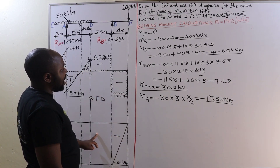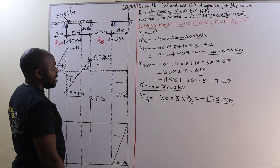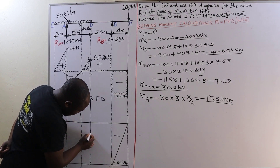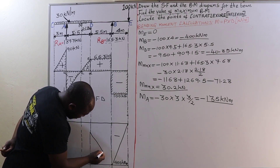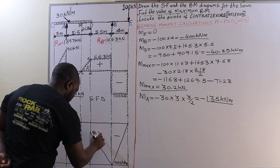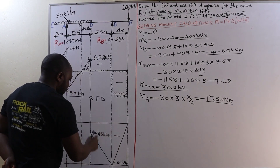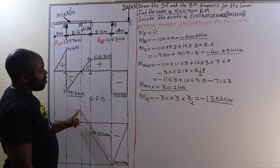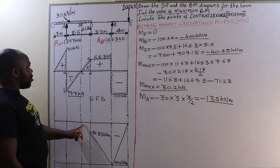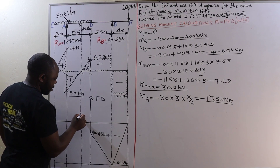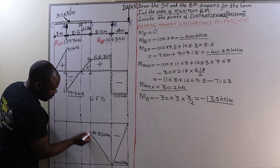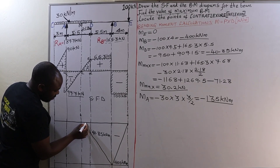At point B we mark negative 400 kilo-Newton-meters. Then the bending moment at point D is negative 40.85 kilo-Newton-meters, so we plot that point and connect it to the 400 kilo-Newton-meter value at B. Then we have the maximum bending moment of 30.2 kilo-Newton-meters, which will be plotted above the horizontal line, joined to the adjacent points with a smooth curve.